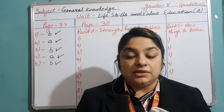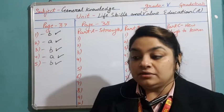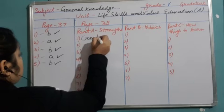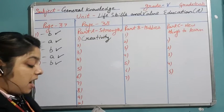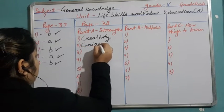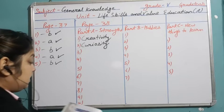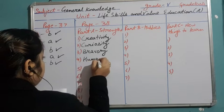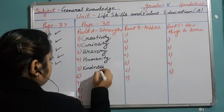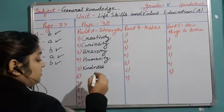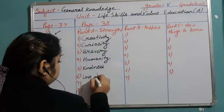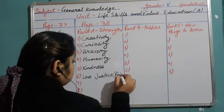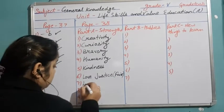For example, a strength can relate to wisdom or creativity — knowing how to present things in a good way. Being curious to know about everything is also a positive trait. You can also write if you are brave, helpful, or kind. Other examples include a love of justice, being fair, and not showing partiality.